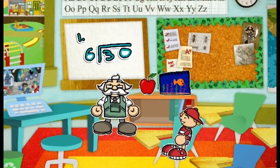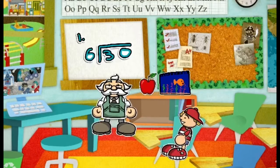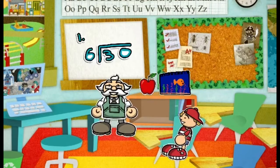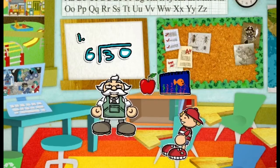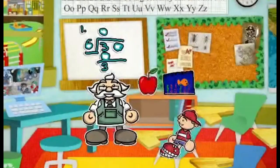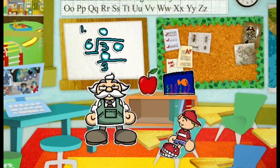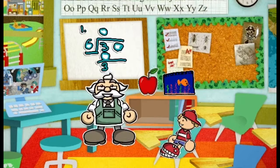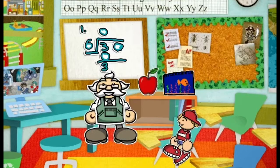So now you put a zero above the three and subtract three minus zero, and you get three. And now you pull down the zero and you have thirty. So now, how many times does six go into thirty? I don't know that.